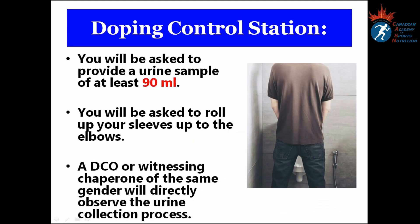What happens when you are at the Doping Control Station? You will be asked to provide a urine sample of at least 90 ml, and you will be asked to roll up your sleeves up to the elbows. A Doping Control Officer or a witnessing chaperone of the same gender will directly observe the urine collection process. This is to prevent cheating.